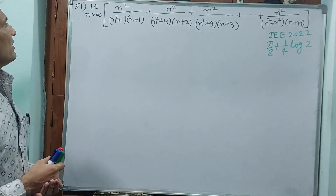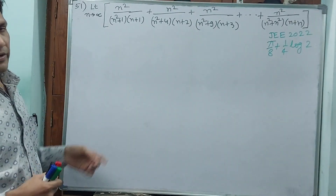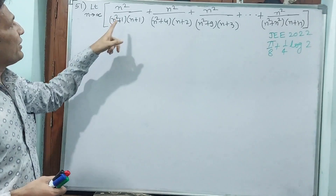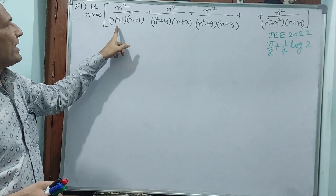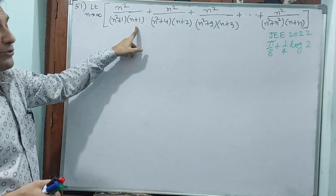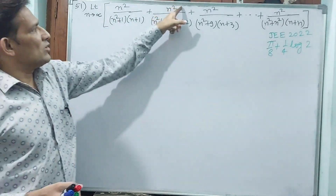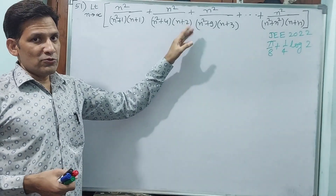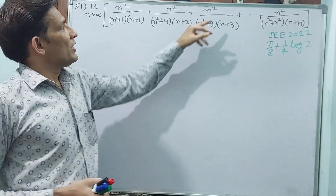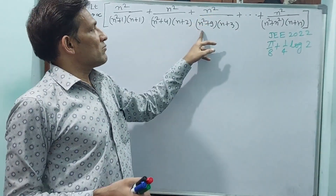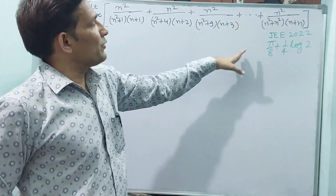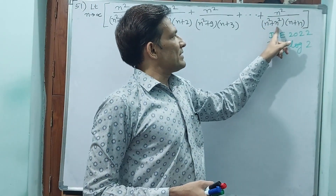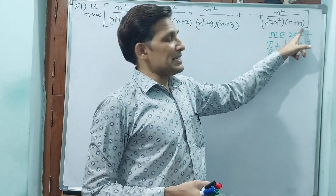Question number 51. Limit n tends to infinity: n squared by (n squared plus 1) into (n plus 1), plus n squared by (n squared plus 4) into (n plus 2), plus n squared by (n squared plus 9) into (n plus 3), plus up to n squared by (n squared plus n squared) into (n plus n).